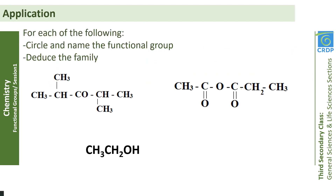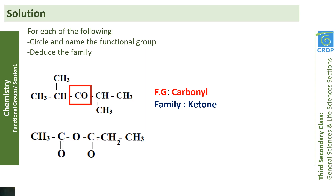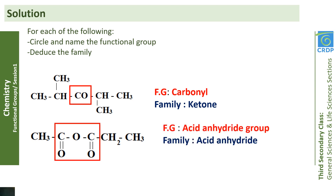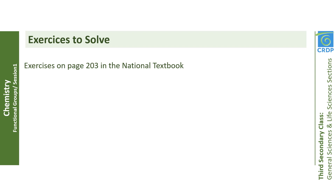Let's solve this application where we have to circle and name the functional group, then deduce the family in each of the following structures. For the first structure, the functional group is the carbonyl group and the family is the ketone family. For the second structure, the functional group is the acid anhydride group and the family is the acid anhydride family. For the last one, the functional group is the hydroxyl group and the family is the alcohol family. To practice more, you may solve exercises on page 203 in the national textbook.